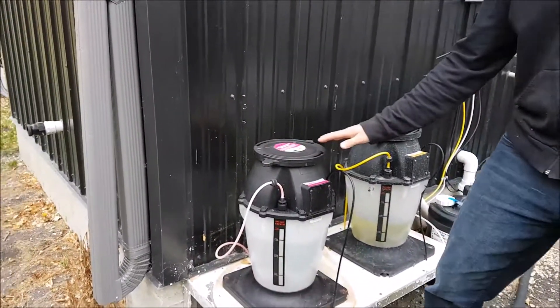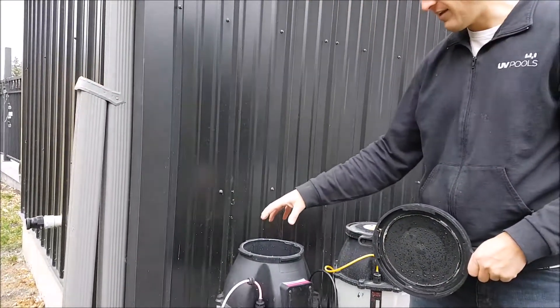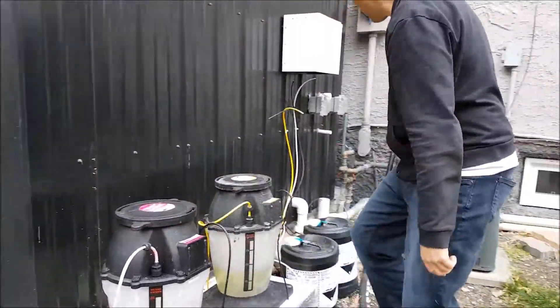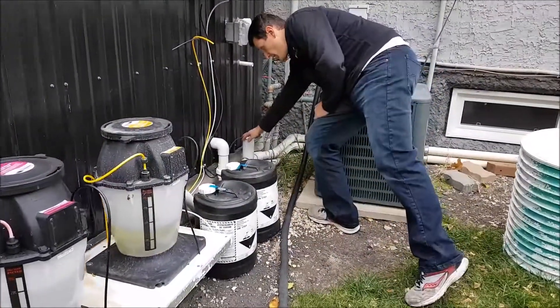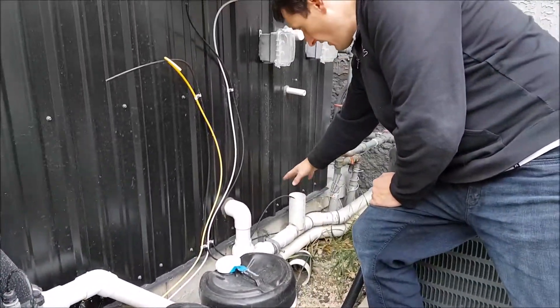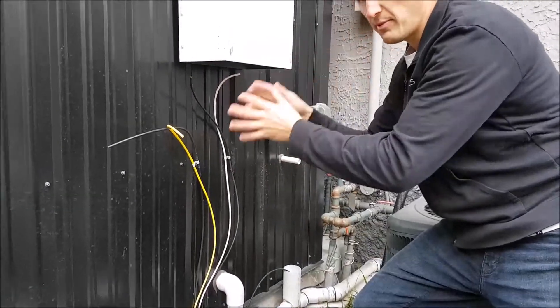So here's the muriatic acid tank. We just add muriatic acid inside the tank and then it gets pumped directly into the pool pipe which is over here. This is downstream of the heater and this is where the acid and chlorine go back into the pool pipes and back into the pool.